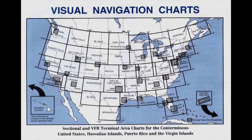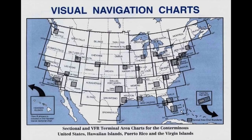There are three charts in particular worth mentioning. The first and most commonly used is called the sectional chart. There are 37 sectional charts that make up the lower 48 states, and the Hawaiian Islands, Puerto Rico, and the Virgin Islands are available as well. These sectionals are double-sided and their scale is 1 to 500,000. They cover good distance and have great detail on topography and the different kinds of airspace that will be color-coded, as well as obstacles and airports.